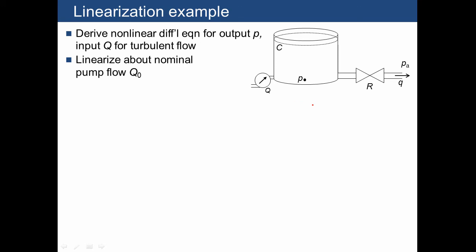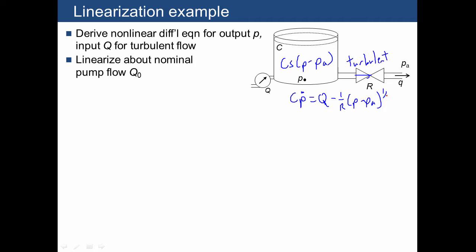Next, let's do an example of a fluid system where we have a fluid resistor that we're going to assume has turbulent flow. In this system we're going to linearize about a nominal Q₀ for the pump flow rate. We'll start by writing the fluid capacitance law, which is C times Ṡ times P minus PA. Ambient pressure is constant, so we can write this as C times Ṗ, and that equals the flow in Q minus the flow out through the fluid resistor, which is (1/R) times (P minus PA) raised to the one-half power.